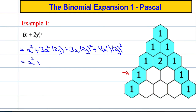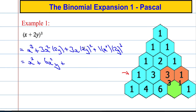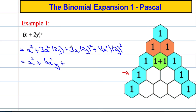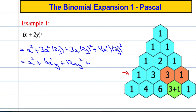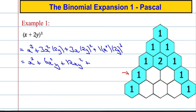Let's tidy this up: x cubed plus three times two is six, so 6x squared y. Plus, two y all squared is four y squared, and four times three is twelve, so 12xy squared. Plus, one times one times two y all cubed — two times two times two is eight — so you get 8y cubed.